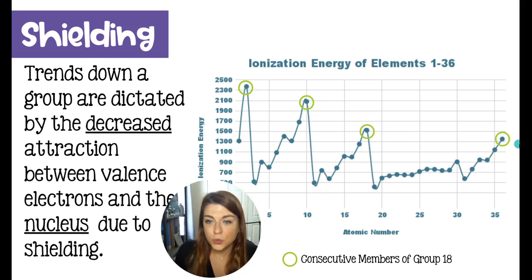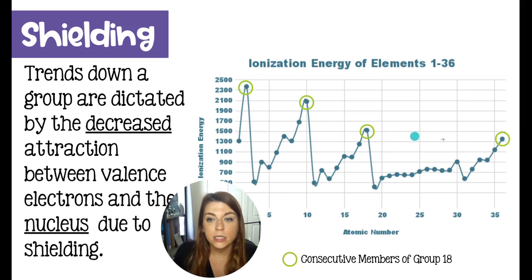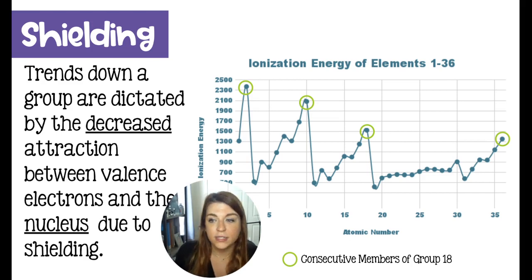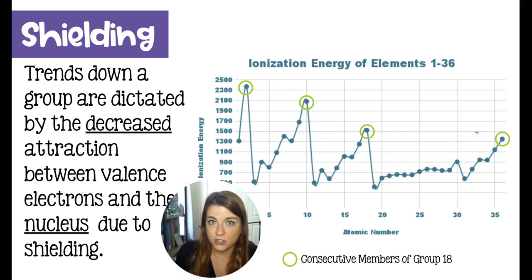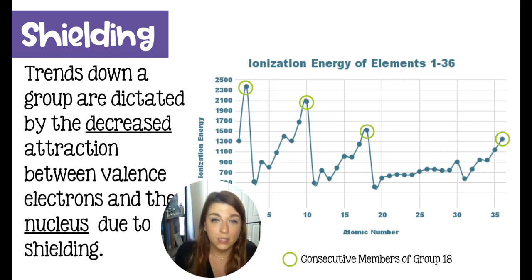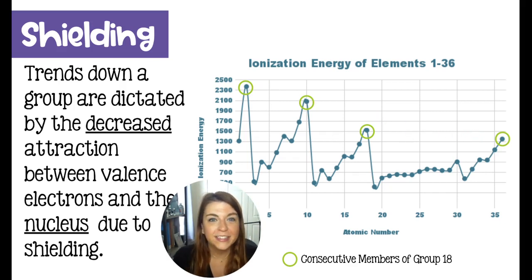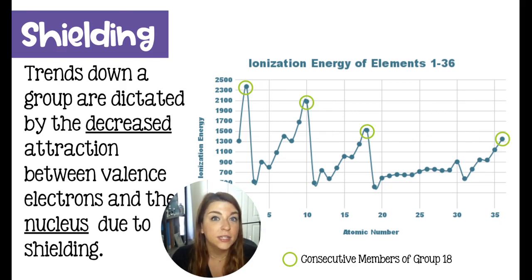Going down the group, we have increased distance between the valence electrons and the nucleus. As a result, those electrons are less attracted. Plus, we have more electrons in general, increasing repulsive forces, making the ionization energy drop over time. The same thing is true for electronegativity — going down a group, electronegativity decreases.